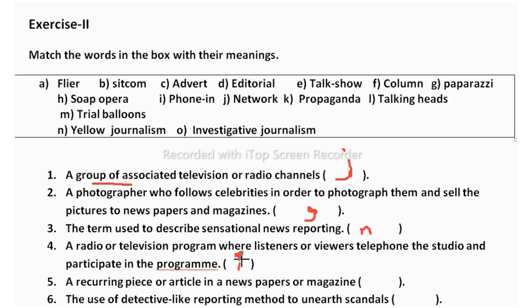A recurring piece or article in a newspaper or magazine is called a column. So the correct answer is column, F.